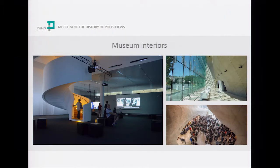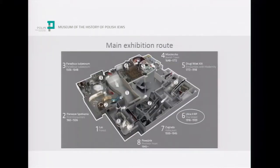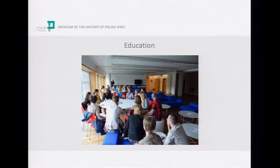The core exhibition is located below ground level and presents 1,000 years of history of Jewish life in Poland. It is divided into eight galleries, beginning with the forest gallery, which tells the legend of the first Jews settling on Polish soil, up to the post-Second World War period. Aside from the core exhibition and temporary exhibitions, Polin Museum is engaged in various cultural and educational activities — workshops for both children and adults, Polish-Israeli youth exchange, concerts, film screenings, book launches, and celebration of Jewish holidays.